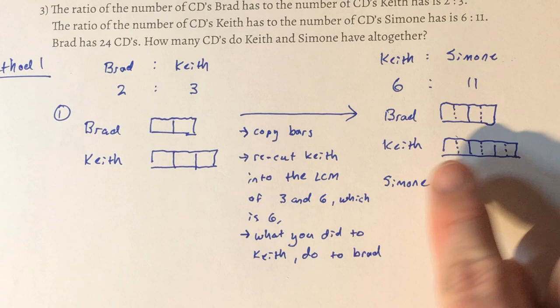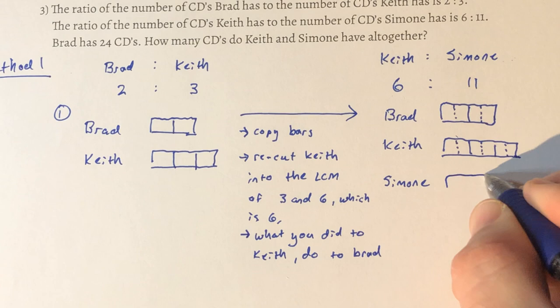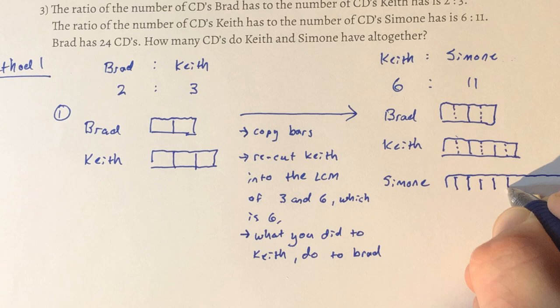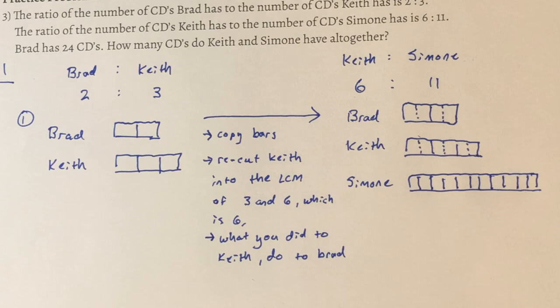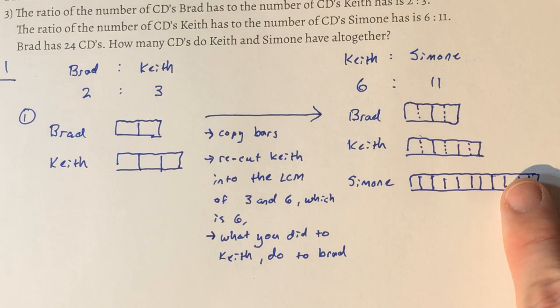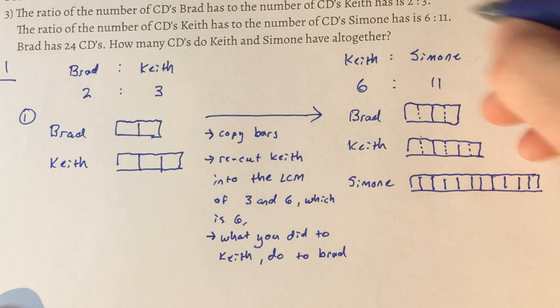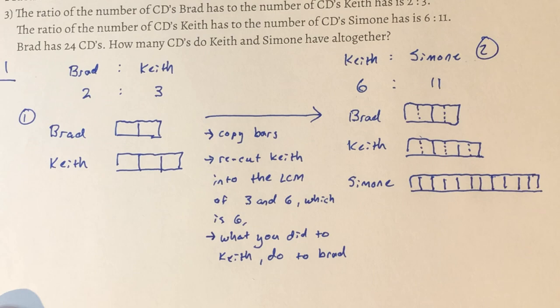We cut each of Keith's units in half to get 6, so we do the same to Brad — now Brad has 4 units. So Brad is 4, Keith is 6. Now let's put in Simone with 11 units. After: Brad has 4 units, Keith has 6 units, Simone has 11 units. These are our bars — that's just step one. First step we've got before, second step we've got our after.